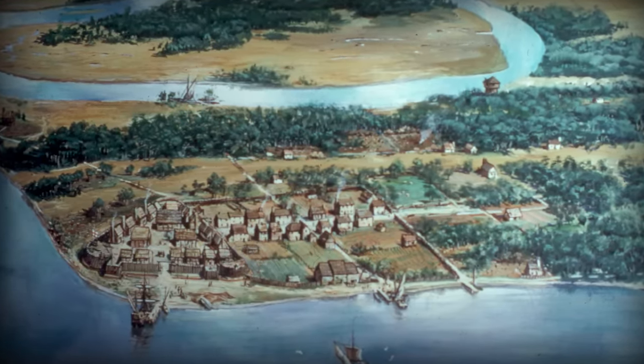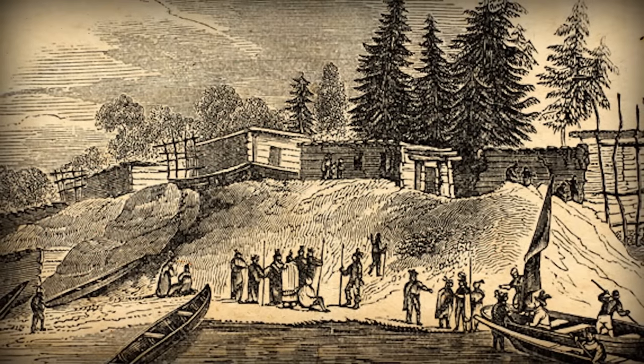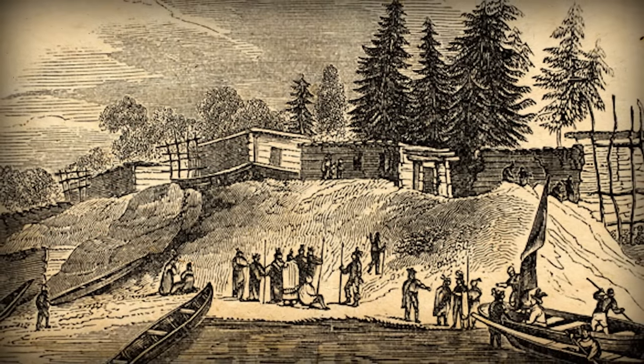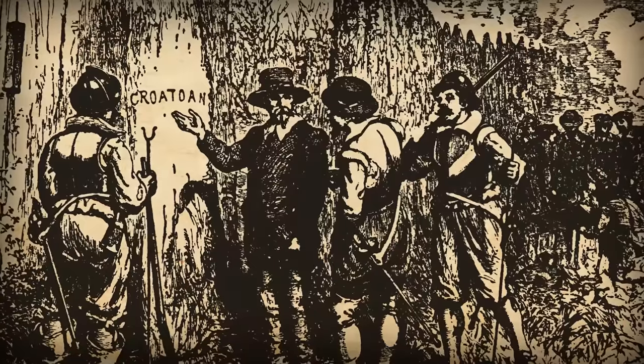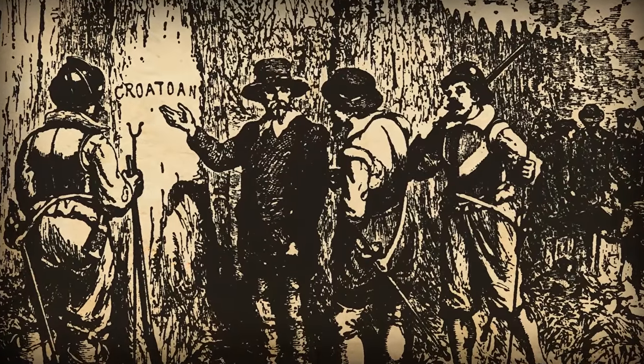I say successful because there were two previous attempts to colonize the region. They were both epic failures, the more famous of which was the colony at Roanoke Island, set up by Sir Walter Raleigh, which is famous because all the colonists disappeared, leaving only the word Croaton carved into a tree.